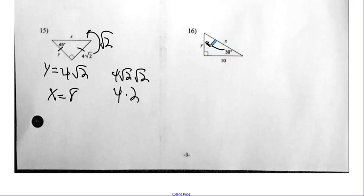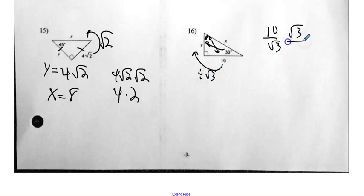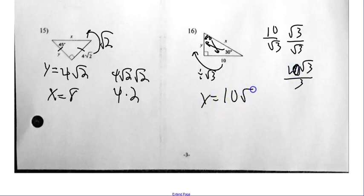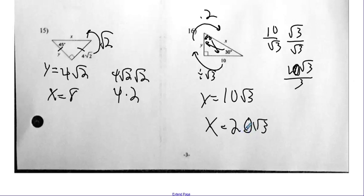Number sixteen — I do not have the short side. This is 60, so I have the long side. So to go to the short side, I do 10 divided by radical three — I must rationalize. That gives me 10 radical three over three, and that's it. I cannot reduce 10 and three. So Y is 10 radical three over three. And how do I go from the short leg to the hypotenuse? Simply double the outside number only. So 10 doubled is 20, the radical three stays.